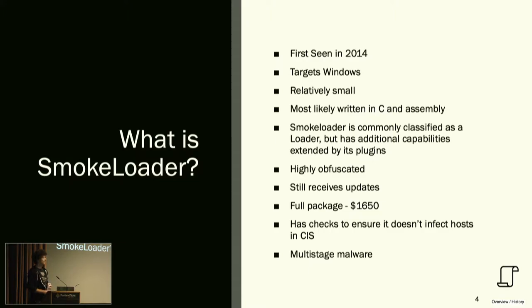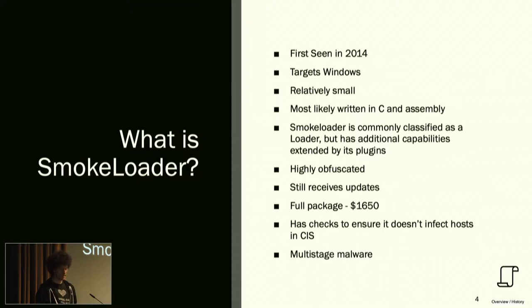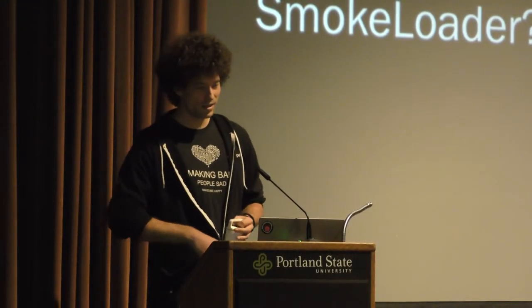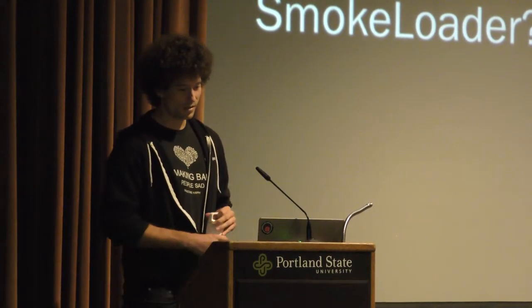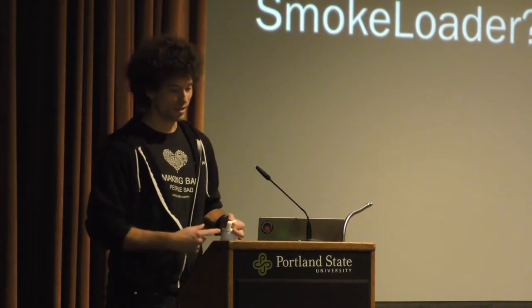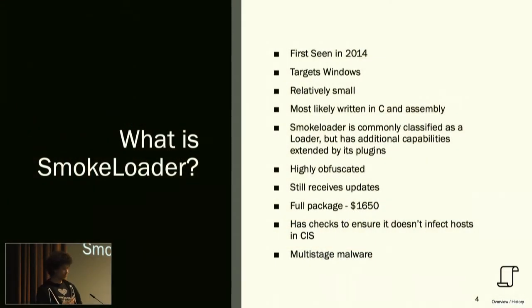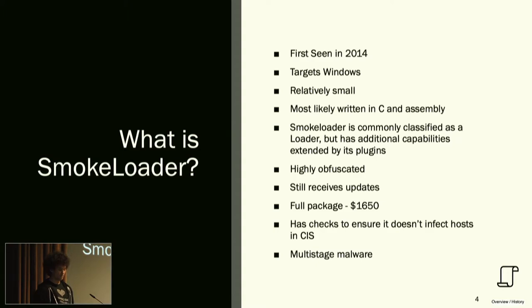While Smoke Loader is a loader, it has additional plugins that extend its capabilities for data exfiltration and additional actions. From a reverse engineering perspective, people like to analyze it because it's highly obfuscated with techniques not seen in other malware families. It's had continued development since 2014 with roughly an update every year or two. The entire package — panel, bot, and plugins — runs about $1,600. Notably, there is a hard-coded check that prevents infection of Russian machines that cannot be bypassed. Finally, this is multi-stage malware with a first stage and a final stage.